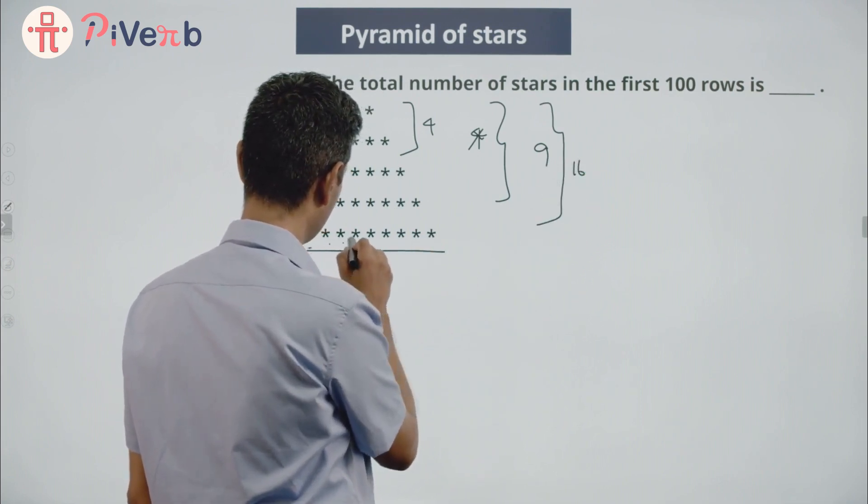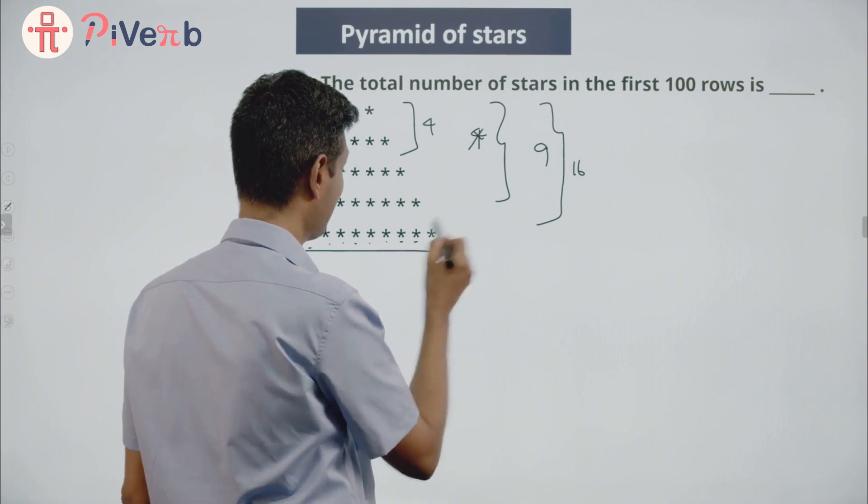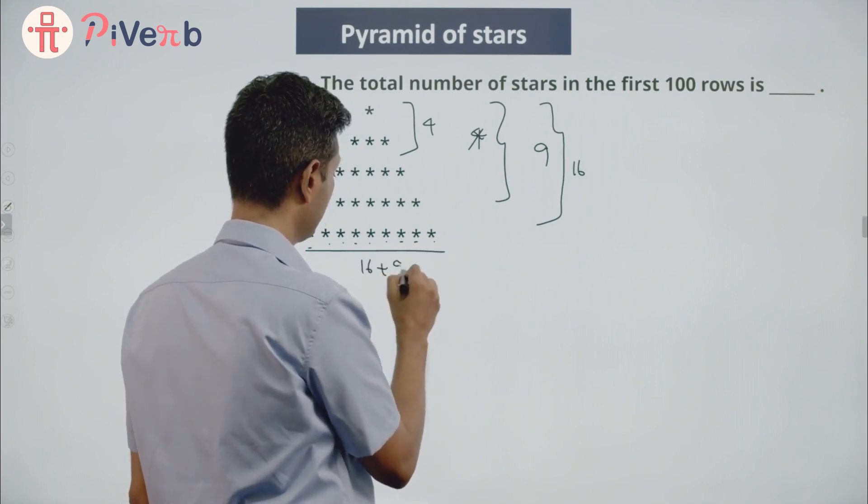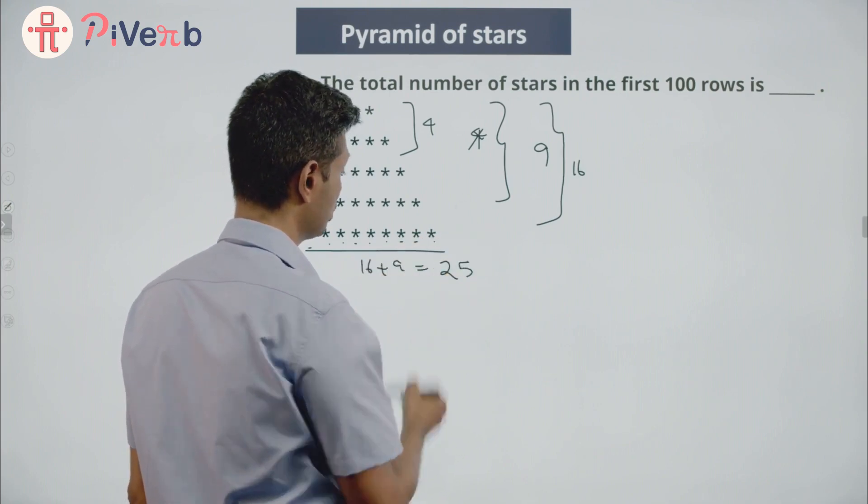Here there are 1, 2, 3, 4, 5, 6, 7, 8, 9, 9 more, 16 plus 9, 25 for the first 5 rows.